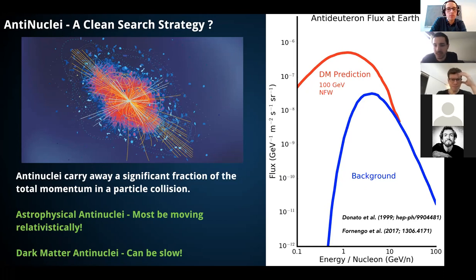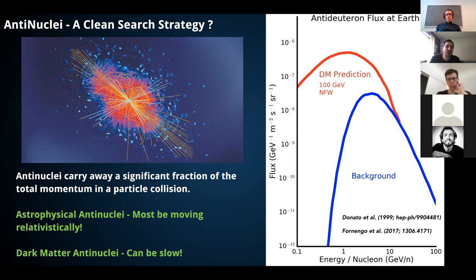There's been a search process underway for anti-deuterons over the last 20 years, first pointed out by Fiorenza Donato and collaborators in 1999, ratcheting up now with experiments like GAPS — large balloon experiments supposed to fly in the next year or two. The reason you do anti-deuterons is it's the simplest anti-nucleus to form; everything else gets rarer as you go to heavier anti-nuclei, but already you have a signal-to-noise of 10⁵, making this a clean detection channel.